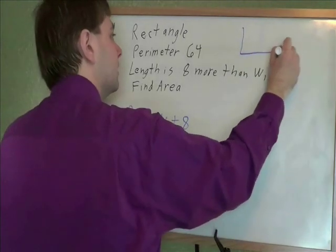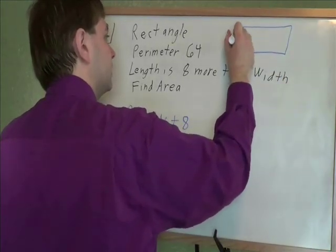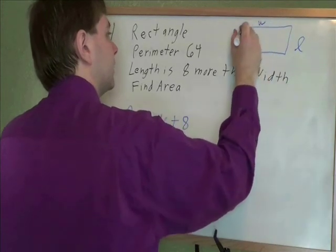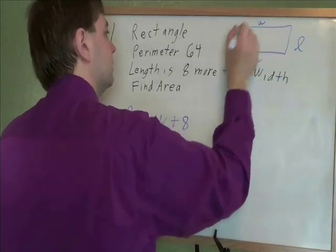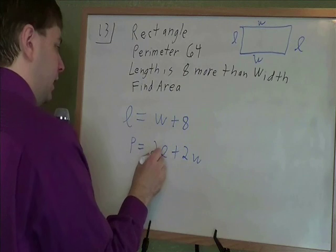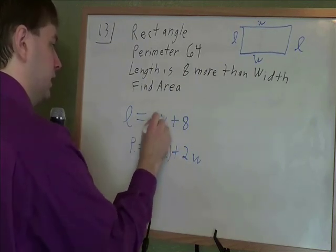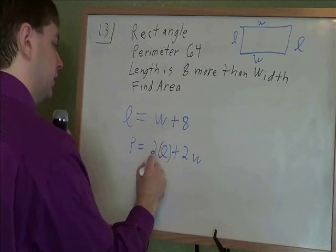Remember perimeter is how far you would have to go to walk around a shape. And for a rectangle, that's 2 lengths plus 2 widths. And now I don't know length or width, but I know that the length is equal to width plus 8. So where I used to have the length L, I'm going to put W plus 8 instead of it.